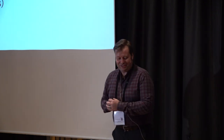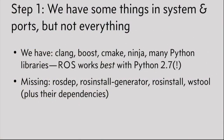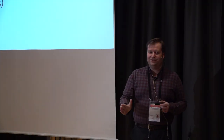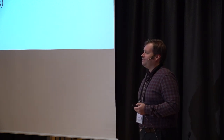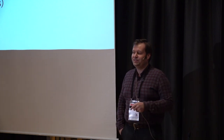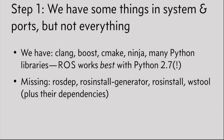Step one is getting the prerequisites installed. We already have quite a few things in the system and ports tree - Clang, Boost, CMake, Ninja, and a lot of Python libraries. There's a side note that ROS works best with Python 2.7. They've been claiming since 2015 that maintainers should make sure it runs with Python 3.5 or newer, but when I tried Python 3 it didn't quite work right. So I went back to Python 2.7 - there's still a bit of work needed before ROS can truly be a Python 3 thing.